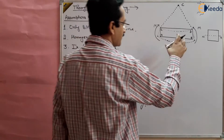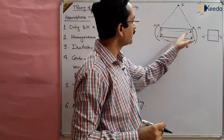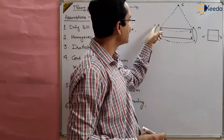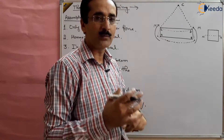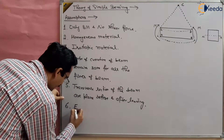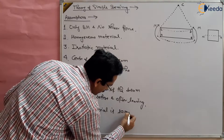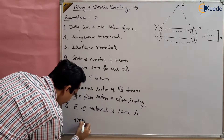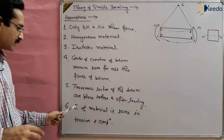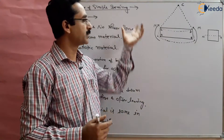The final assumption is about modulus of elasticity, which plays a very important role in the theory of simple bending. There is compression in the upper fiber and tension in the lower fiber — there is a decrease in length on one side and an increase on the other. The assumption is that the modulus of elasticity E of the material remains the same in both tension and compression. These are all the assumptions on which the theory of simple bending is developed.